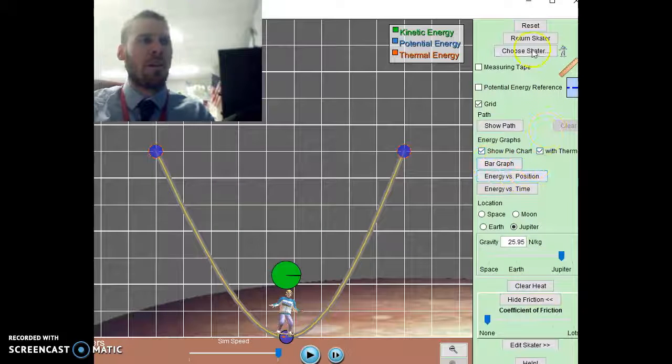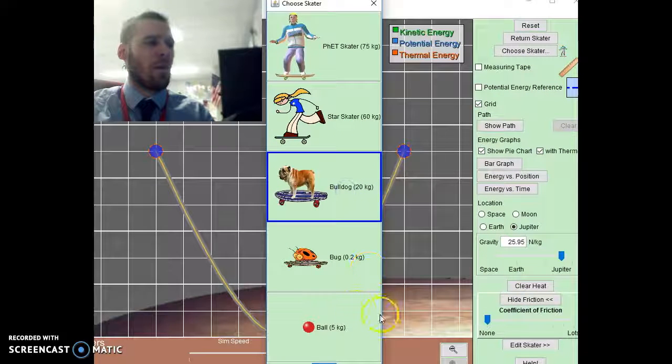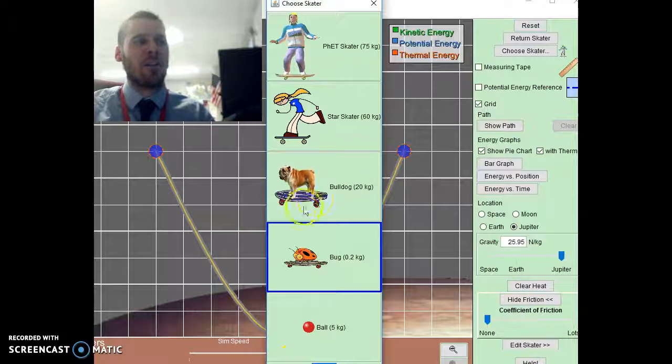And a couple other fun things: you could edit your skater by changing the mass to maybe a bulldog, a bouncing ball, a bug. And that can give you a better understanding for how total energy might change as the mass of the skater is also changing.